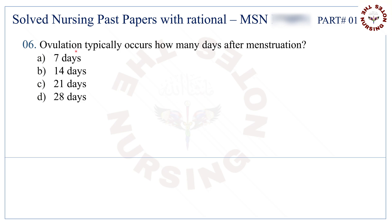Question number 6: Ovulation typically occurs how many days after menstruation? The correct answer is B — 14 days.